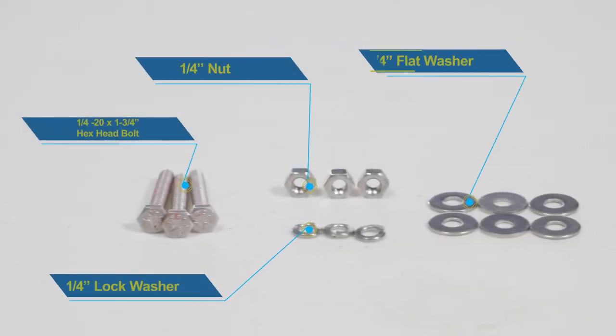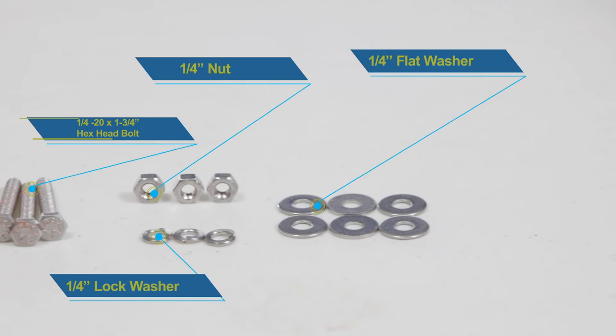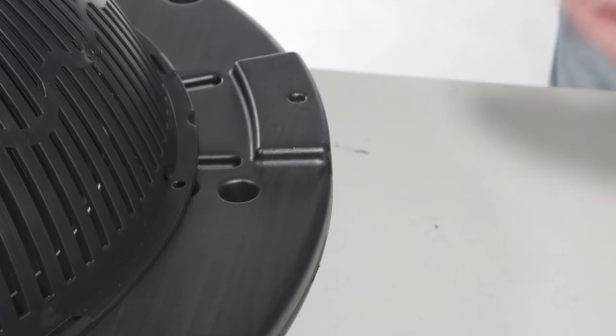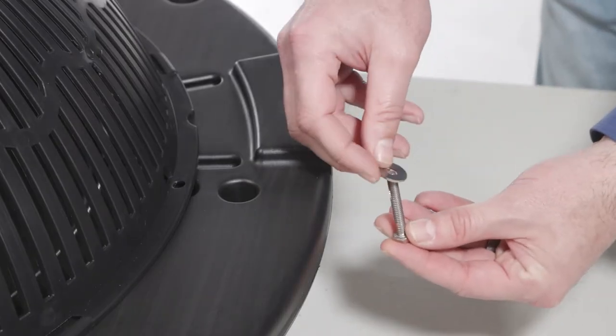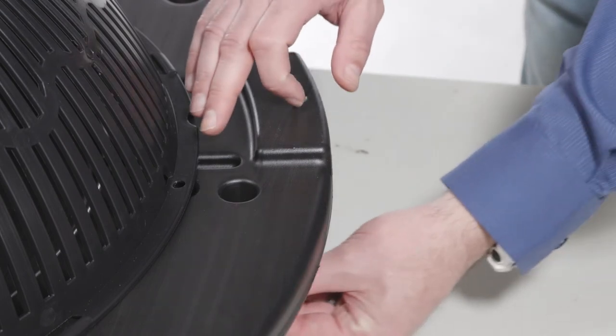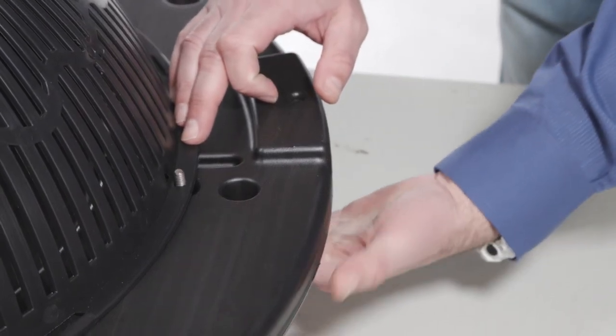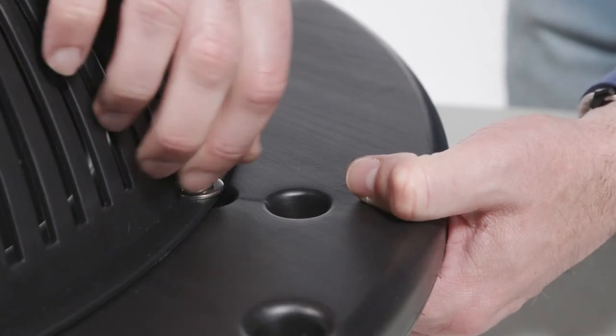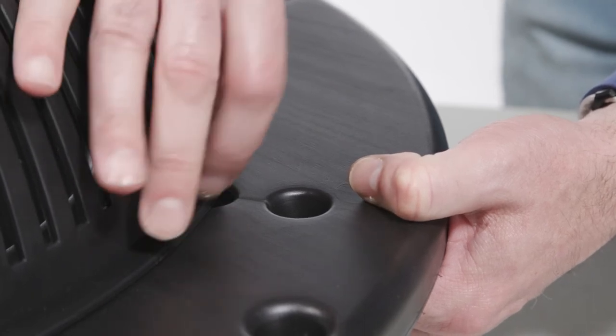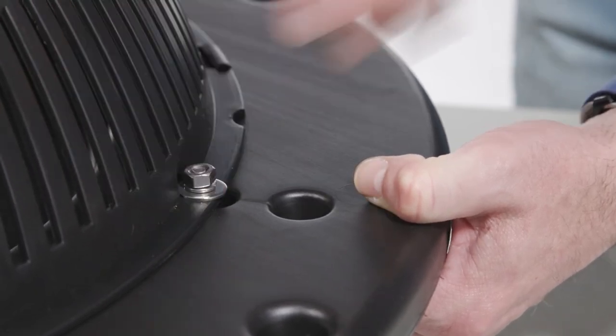Once everything is in its proper place, take the remaining hardware and place it through the three aligned holes to loosely attach the screen to the float. Now with your 7/16-inch wrench and your 7/16-inch socket and ratchet, go ahead and tighten all hardware on the floating screen.